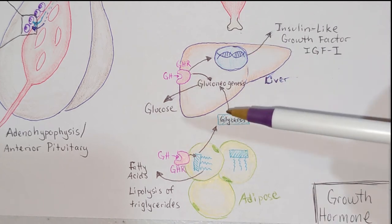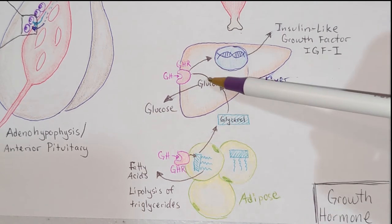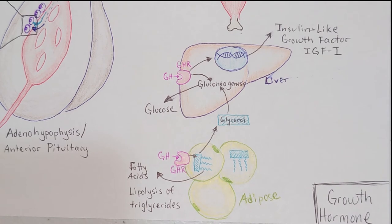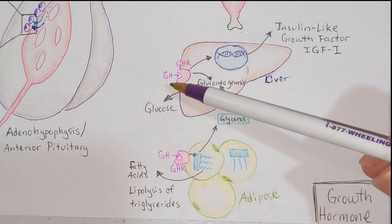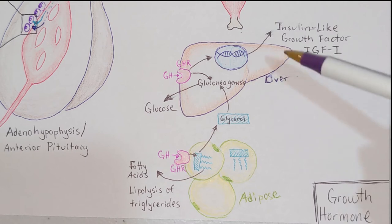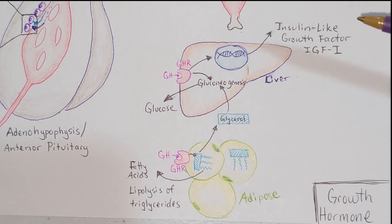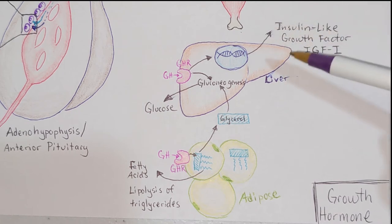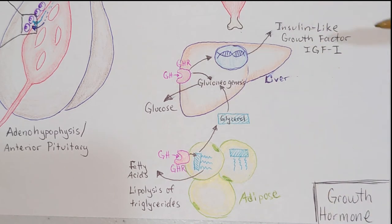The second function within the liver is that growth hormone is going to stimulate the transcription, translation, processing, and release of yet another hormone into the blood. Our story continues with both growth hormone and a hormone stimulated by growth hormone — insulin-like growth factor 1 (IGF-1).